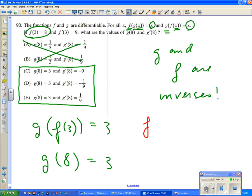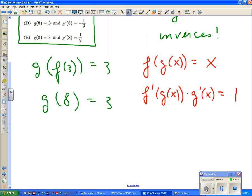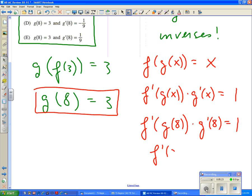Secondly, if we know that f of g of x equals x, then we know if we take the derivative of both sides, we have f prime of g of x, the derivative of the outside, times the derivative of the inside has to equal the derivative of the right side, and the derivative of the right side is equal to 1. Well, if we're talking about finding g prime 8, we're talking about f prime g of 8 times g prime 8 equals 1. Now, we just figured out that g of 8 was the same thing as 3. So, f prime 3 times g prime 8 has to equal 1.